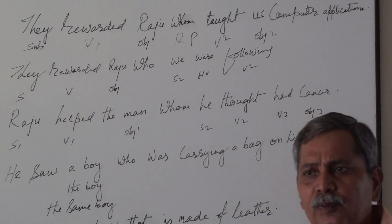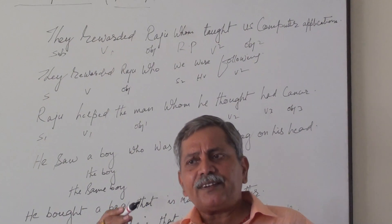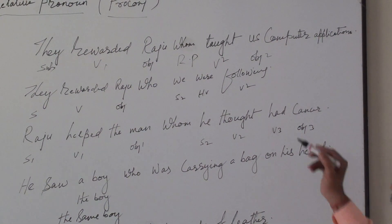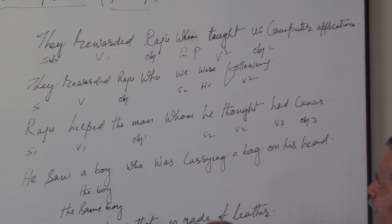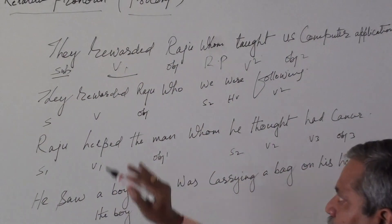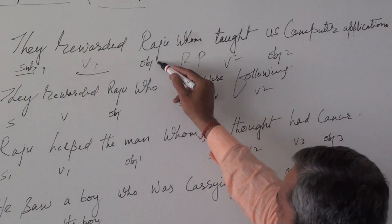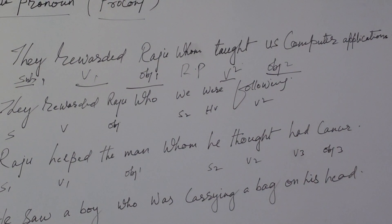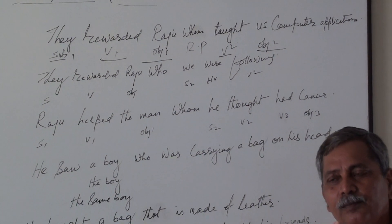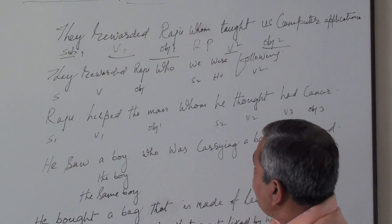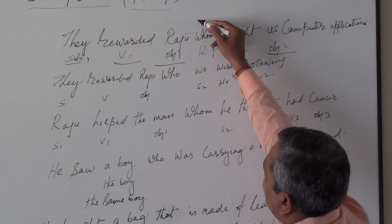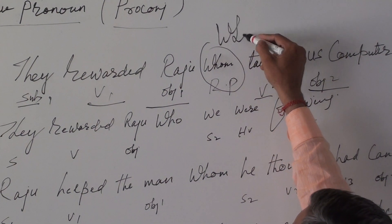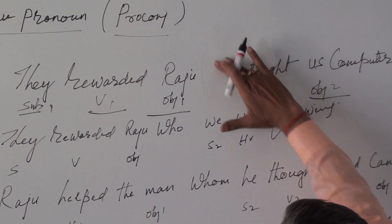There are two objects — indirect and direct — because some transitive verbs take two objects. Now see: there is subject one, verb one, object one. Then there is a second verb and object, but is it possible that a sentence can have a verb without a subject? No, it cannot. It means we need a subject here, and that should be 'who'. A relative pronoun acts as a pronoun — it can be a subject or an object — and here it is working as the subject of this verb. So 'who' is correct.